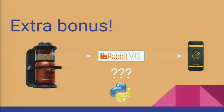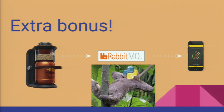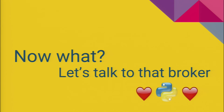We got an extra bonus for running the broker ourselves: now we can do pub/sub, and the MiniBrew can send information to RabbitMQ, and any devices that want to listen to that brewing session can listen directly to Rabbit. So the real-time information doesn't need to pass through the server anymore. What is Python doing while devices get real-time data? Chillaxing — there's no need to do anything.